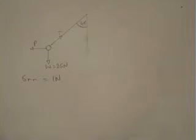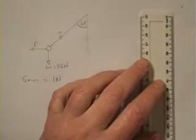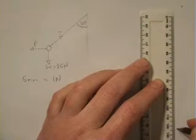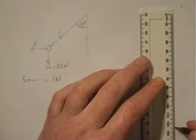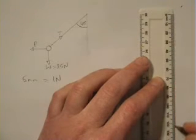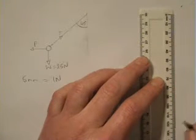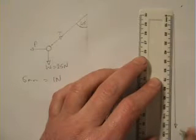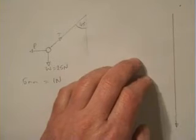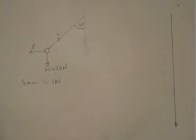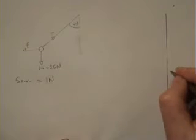We need to draw a vector to represent the weight so I'm going to draw a line vertically downwards 125mm long, which will just fit on the page. So there's my 25 Newtons.